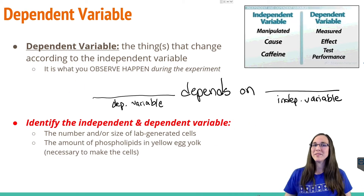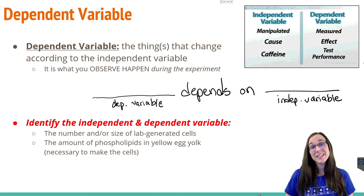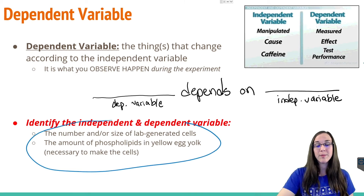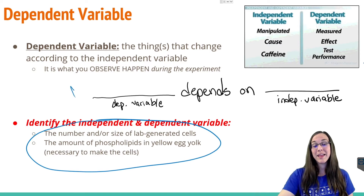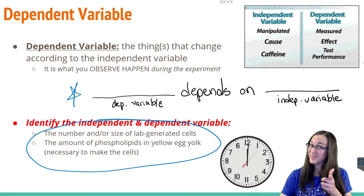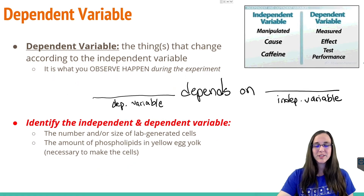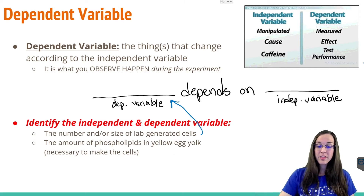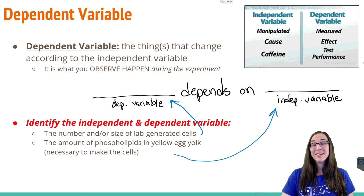Why don't you give it a try? See if you can identify the independent and dependent variable between the following two options using our 'blank depends on blank' format. Hopefully you found that the number and/or size of lab-generated cells would depend on the amount of phospholipids in the yellow egg yolk. More fat means more cells.